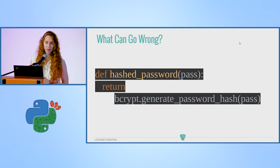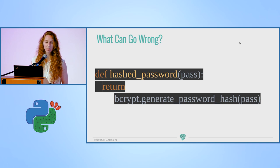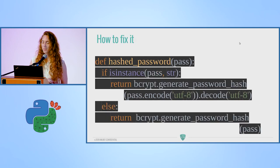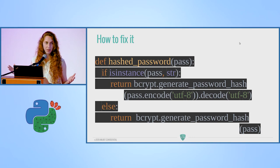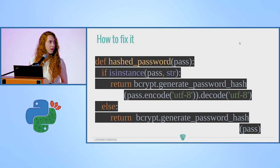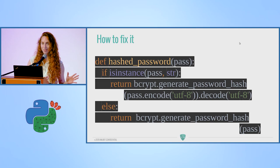Another surprising example: the bcrypt library's generate_password_hash expects its input to be encoded and its output to be decoded. This is extremely surprising because if you don't do the encode/decode, you don't get an error — you just don't get the same hash as in Python 2. To find out what you're supposed to do, you have to read the library documentation carefully.